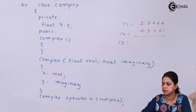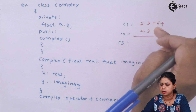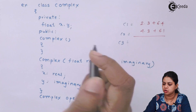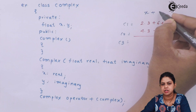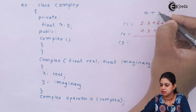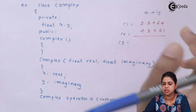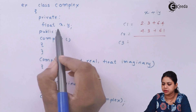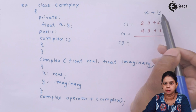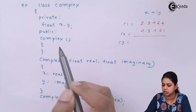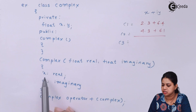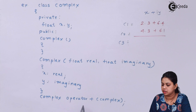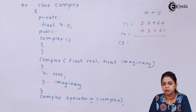This program performs addition of two complex numbers. c3 is going to be the addition of c1 and c2. A complex number always consists of two parts: the real part and the imaginary part. I consider x as the real part and y as the imaginary part. I have declared two variables x and y. There is a zero-argument constructor and a two-argument constructor where I initialize x as real and y as imaginary.